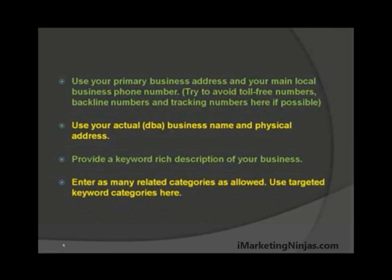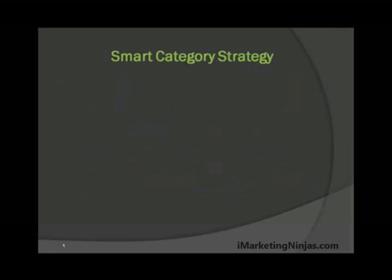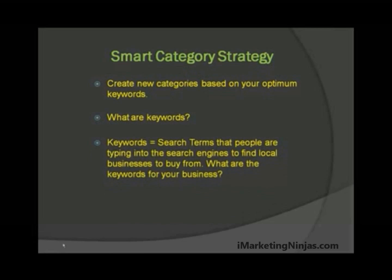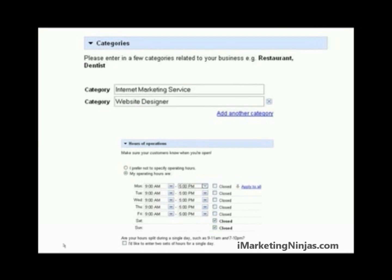Enter as many related categories as allowed and use targeted keyword categories. A smart category strategy is to create new categories based on your optimum keywords. Keywords are basically search terms that people are typing into search engines to find local businesses to buy from. Everything revolves around your keywords — and here's a look at the categories page.